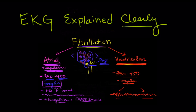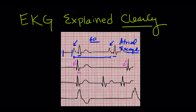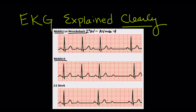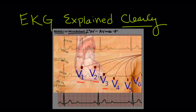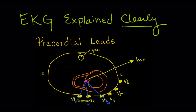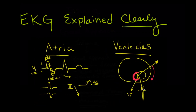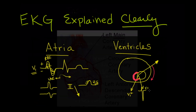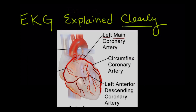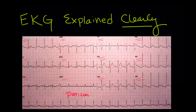We'll cover atrial fibrillation and flutter, widened QRS complexes and the various types of heart blocks, using precordial leads to hone in on certain areas of the heart, atrial enlargements and ventricular hypertrophies, acute coronary syndromes, myocardial infarction, and pericarditis.